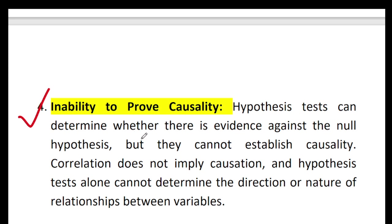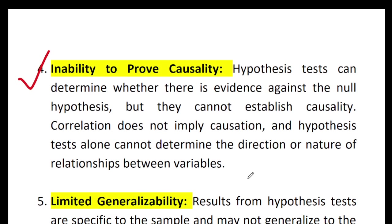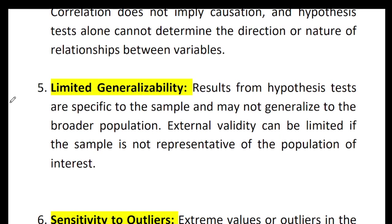The next limitation is inability to prove causality. Hypothesis tests can determine whether there is evidence against the null hypothesis, but they cannot establish causality. Correlation does not imply causation, and hypothesis tests alone cannot determine the direction or nature of relationships between variables.